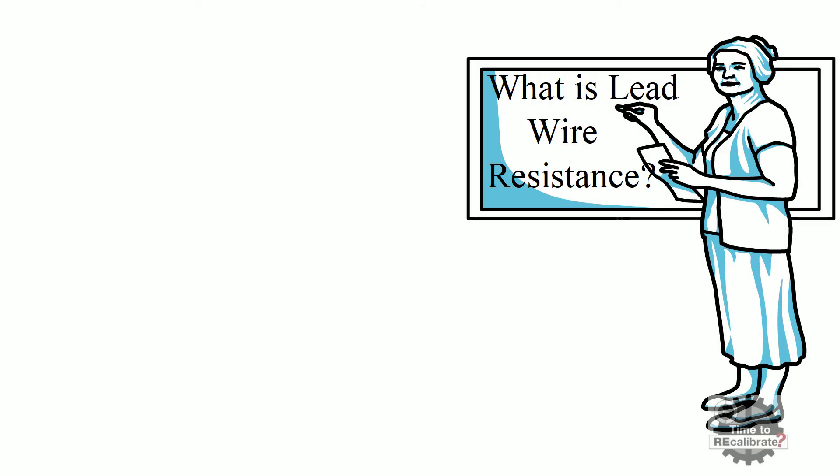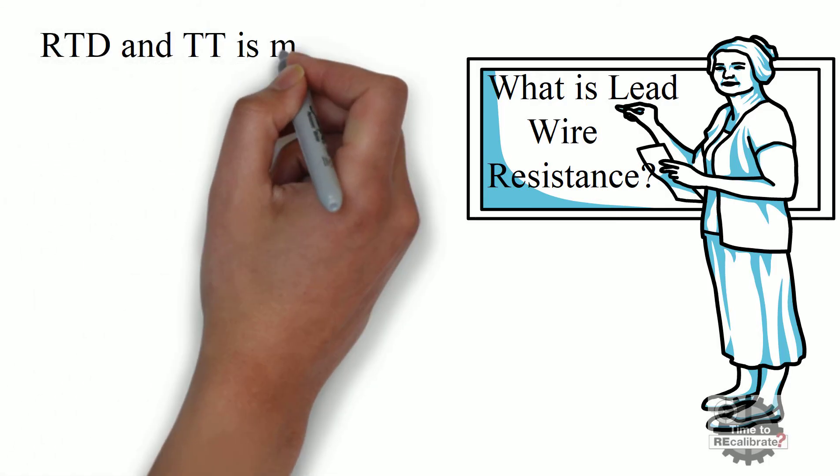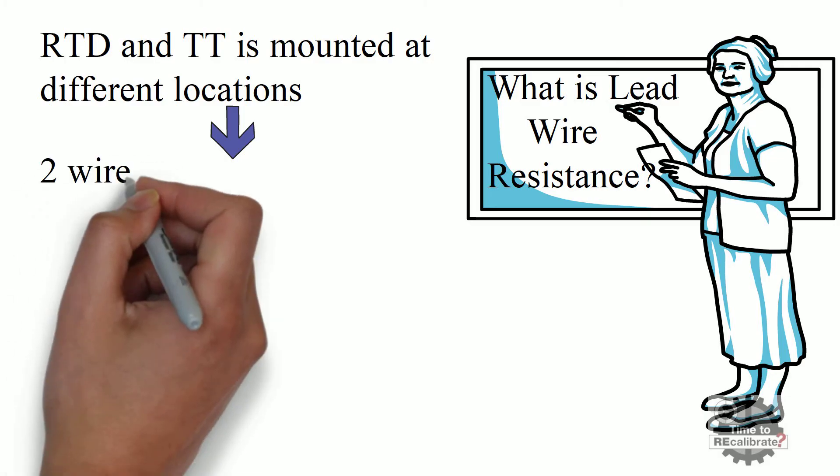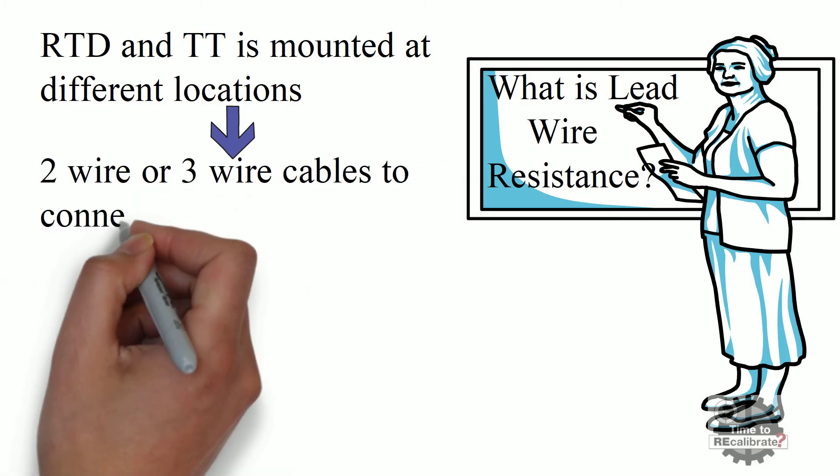As we know that in practical applications, RTD and temperature transmitter are mounted at different locations. So we use 2-wire or 3-wire cables to connect RTD and temperature transmitter.